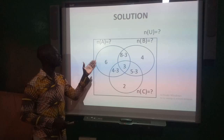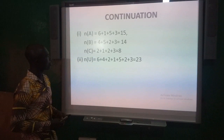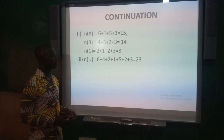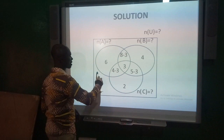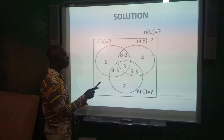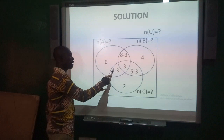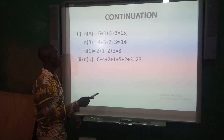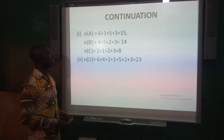From the question we are required to find n(A), n(B), n(C), and n(U). To find n(A), add all the figures within the A circle: n(A) = 6 + (8−3) + 3 + (4−3) = 6 + 5 + 3 + 1 = 15. Therefore n(A) = 15.